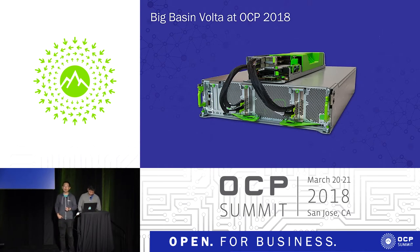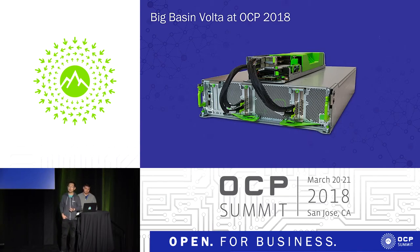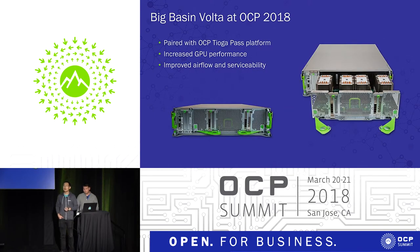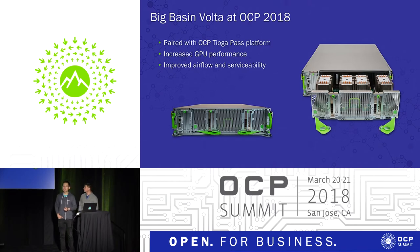This not only provides extra CPU performance, but also allows us to double the PCIe connection between the CPU and GPU. We have also upgraded our Ethernet card to a 100 GigE NIC, which gives us extra network capacity for large-scale distributed training and faster data loading. Combining all of these, we achieve about 66% total platform performance increase compared with the previous Big Basin Pascal generation.